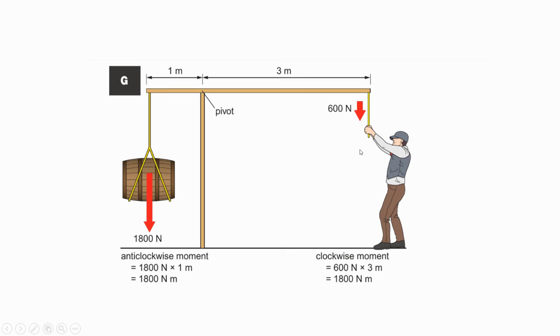If this clockwise moment is equal to the anticlockwise moment, which is 1 metre times 1800, then the scenario will be balanced.